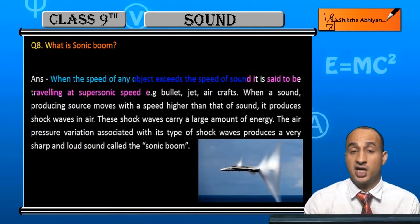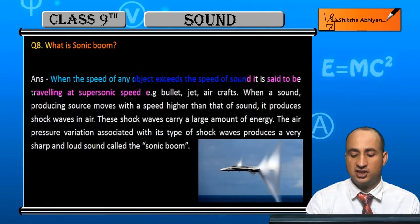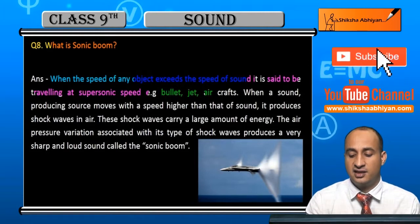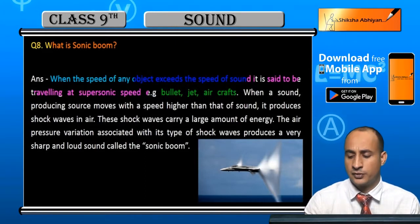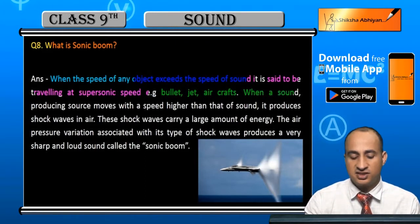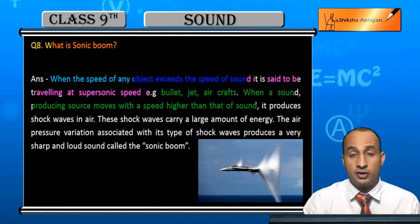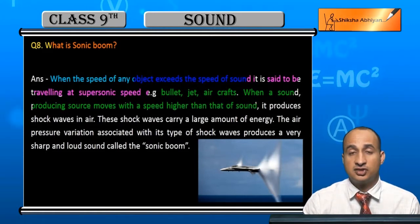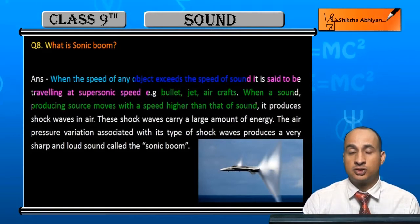Us speed ko hum supersonic speed kehte hain. Examples of supersonic objects include bullets, jet aircraft — ye sab. When a sound-producing source moves with a speed higher than that of sound — jab object ki velocity sound ki speed se zyada ho jati hai — the source's speed becomes greater than the speed of sound.